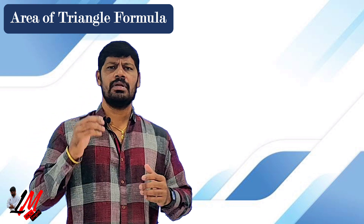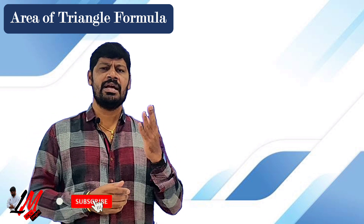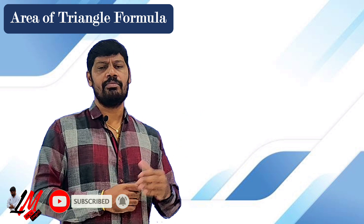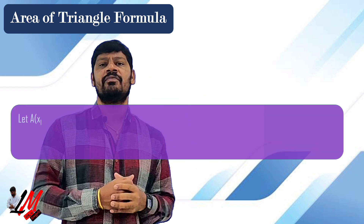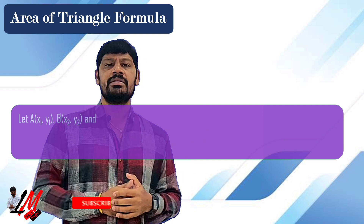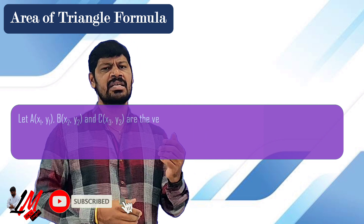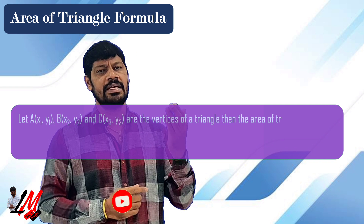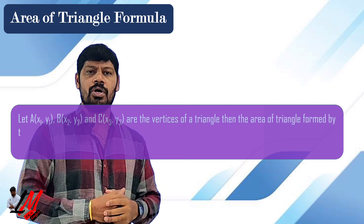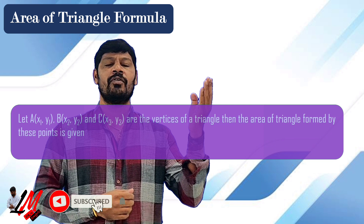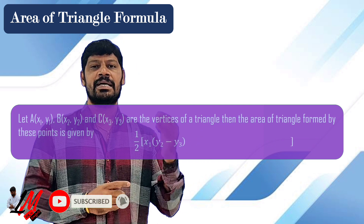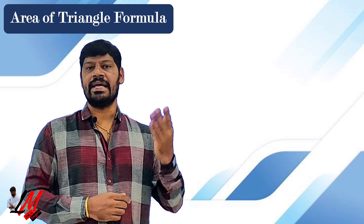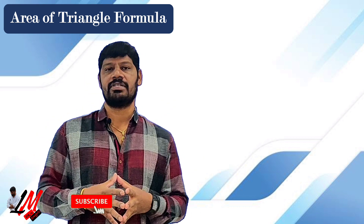Let A(x1, y1), B(x2, y2) and C(x3, y3) be the vertices of triangle ABC. Then the area of triangle ABC is given by delta, which we use to denote the area of triangle. Delta is equal to half of x1(y2 minus y3) plus x2(y3 minus y1) plus x3(y1 minus y2). This is the formula for the area of triangle.